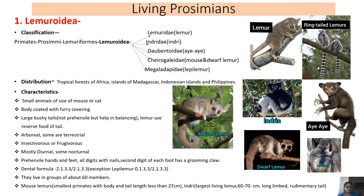The mouse lemur is the smallest primate, with body and tail length less than 27 cm. Indriidae contains the largest lemur. The indri is the largest lemur; they are long-lived and have certain rudimentary features.